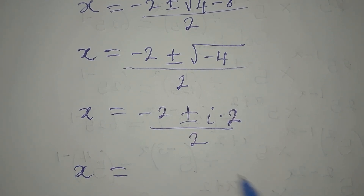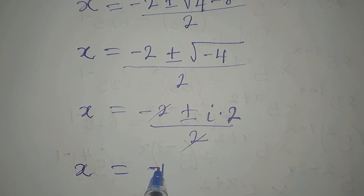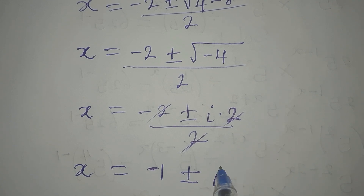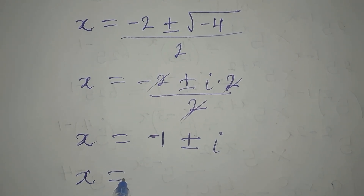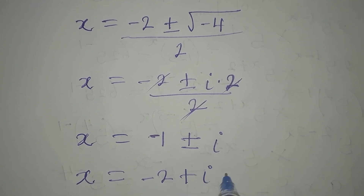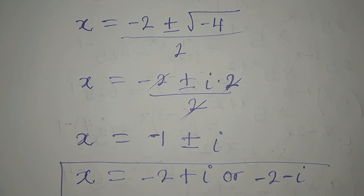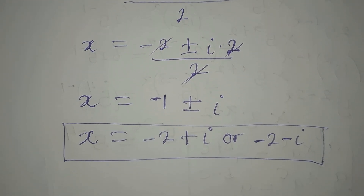Dividing through by 2: the -2 divided by 2 gives -1, and 2i divided by 2 gives i. So x = -1 + i or x = -1 - i. These are the two complex solutions from the first factor.